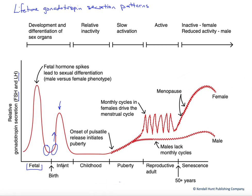This mini puberty further enhances reproductive tract development and the feminization or masculinization of the brain itself — how we view ourselves as male or female. That'll be followed by a prolonged period in childhood where there's very little activity and no reproductive function. Then, largely genetically determined, we're going to get an increase in GnRH and therefore FSH and LH in a pulsatile fashion, and that pulsatile release is going to initiate puberty.